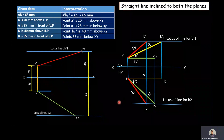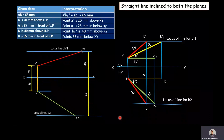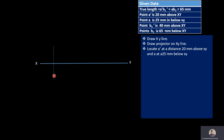Now we will move towards construction of a straight line inclined to both the planes based upon the data. As a first step, draw the XY line. After drawing XY line, draw a projector. On the projector, locate A' as well as A. A' is at a distance 20 mm above XY line. Then at A' and A, draw locus lines parallel to the XY line.